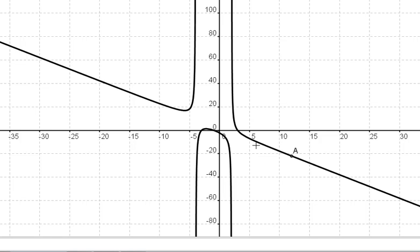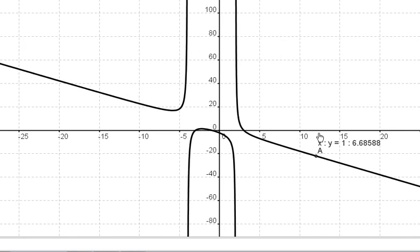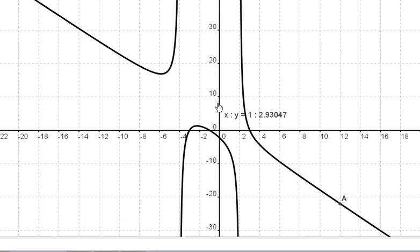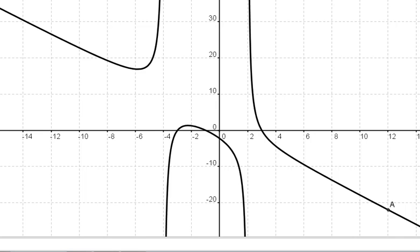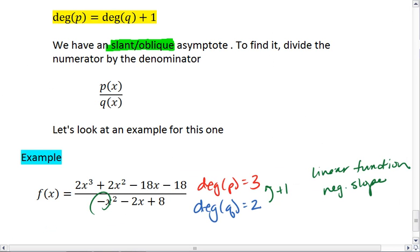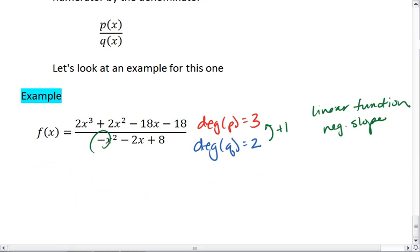So we could draw a dotted line that runs through here, that as your graph goes to positive or negative infinity, it will approach that line but never touch it. There's a way for us to figure out the equation for that line. To do that, we use polynomial long division and divide the numerator by the denominator.